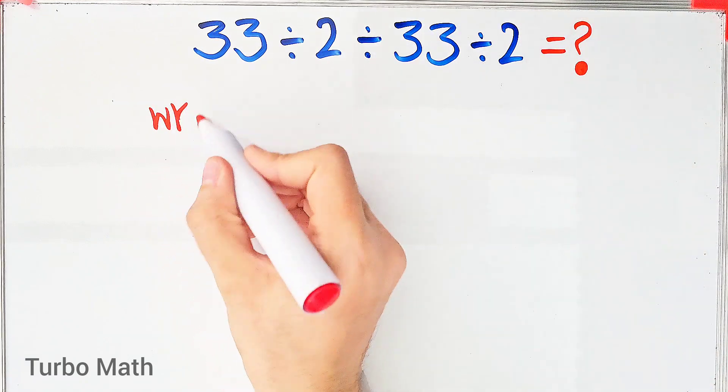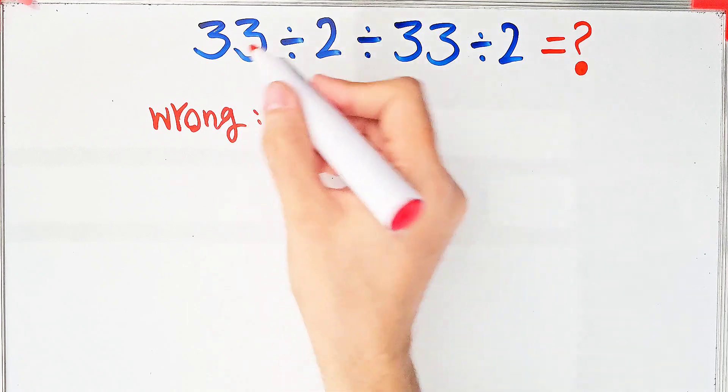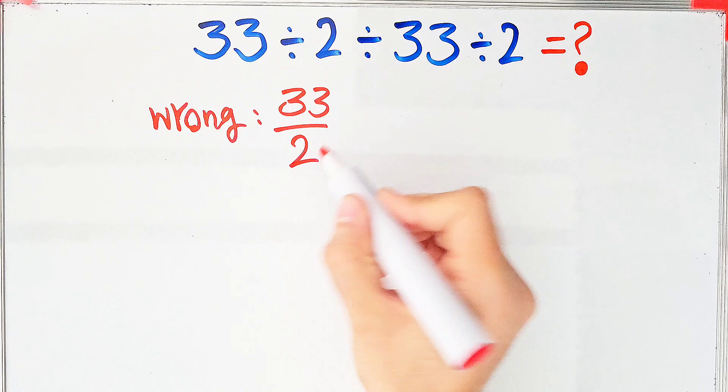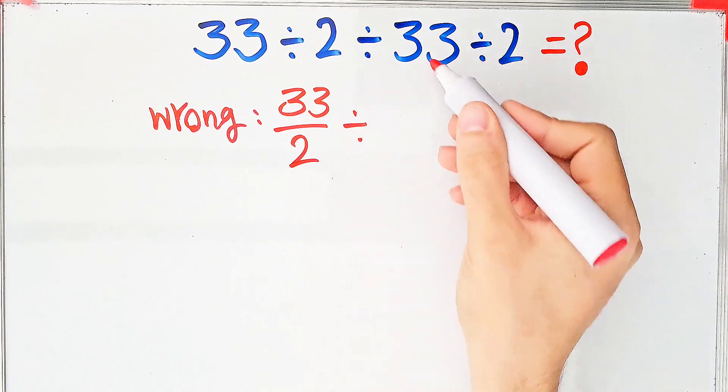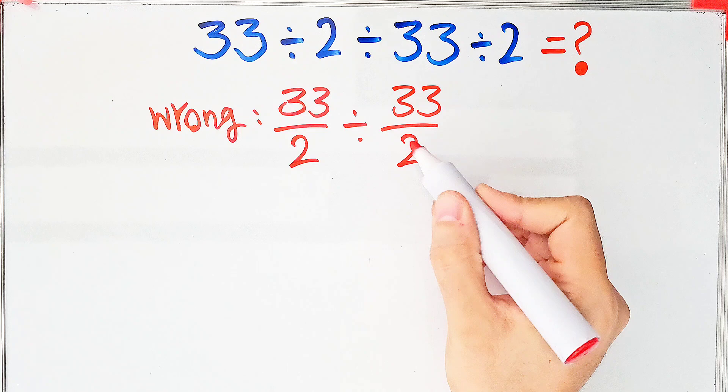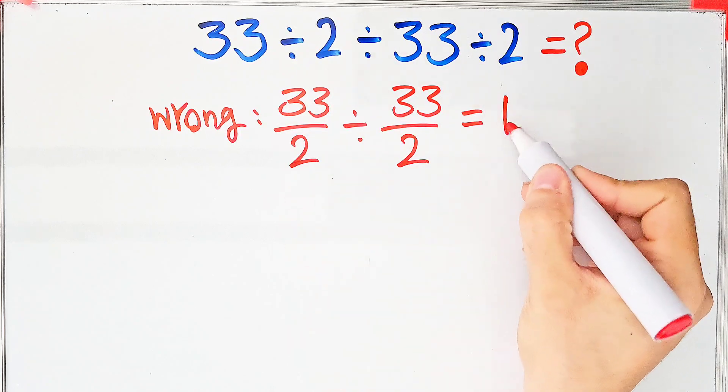In the wrong way of solving this question, some people solve this question like this: 33 divided by 2 equals 33 over 2, 33 over 2 divided by 33 over 2. And they say the final answer of this question equals 1. But this answer is definitely wrong.